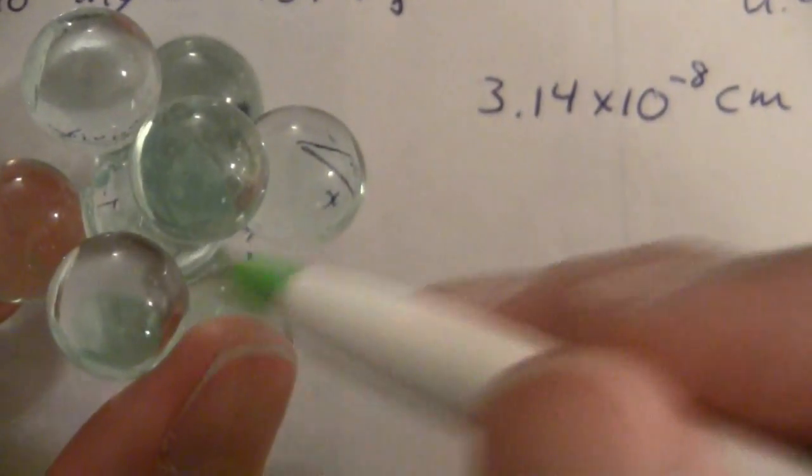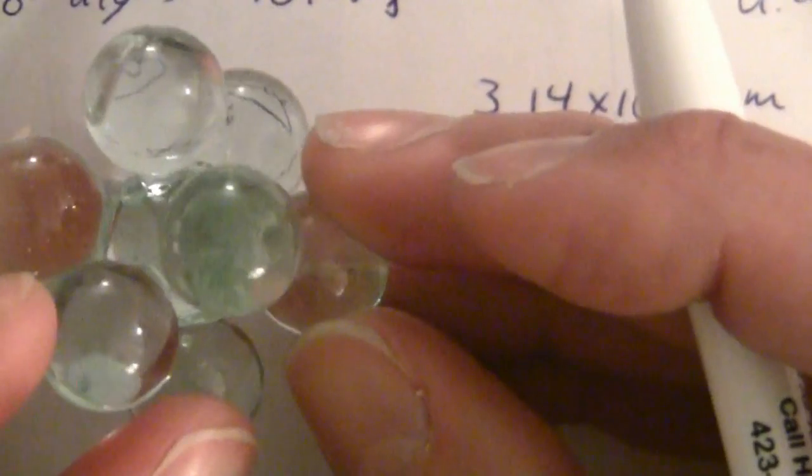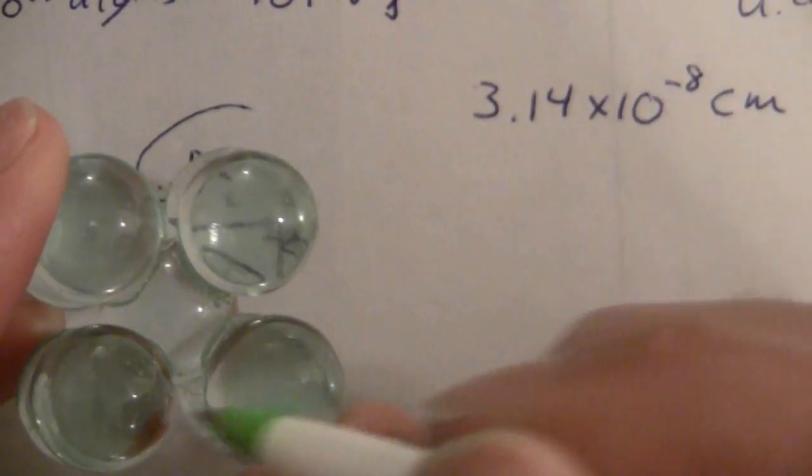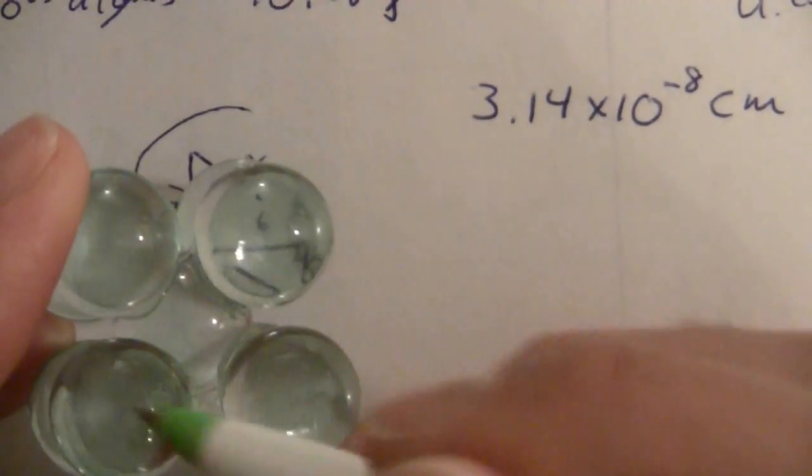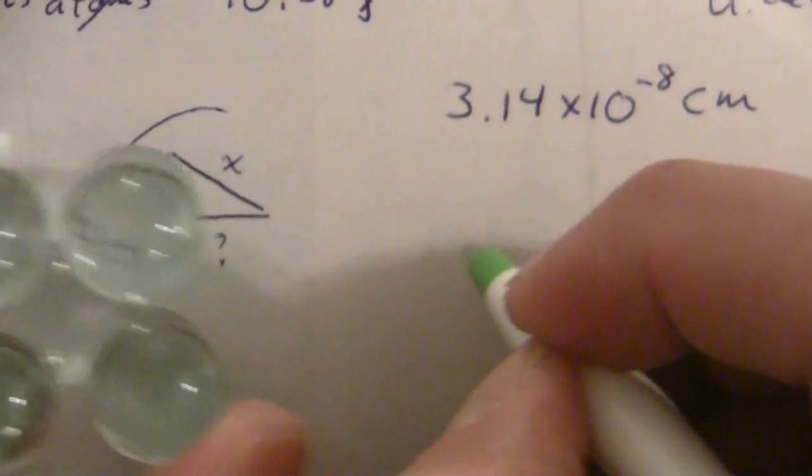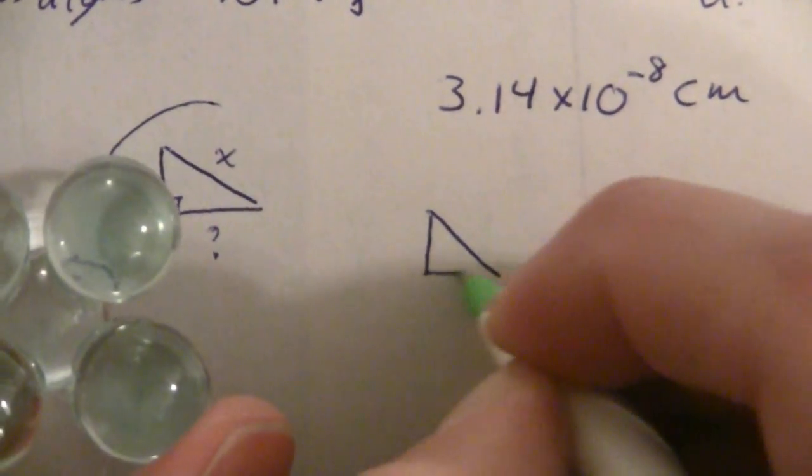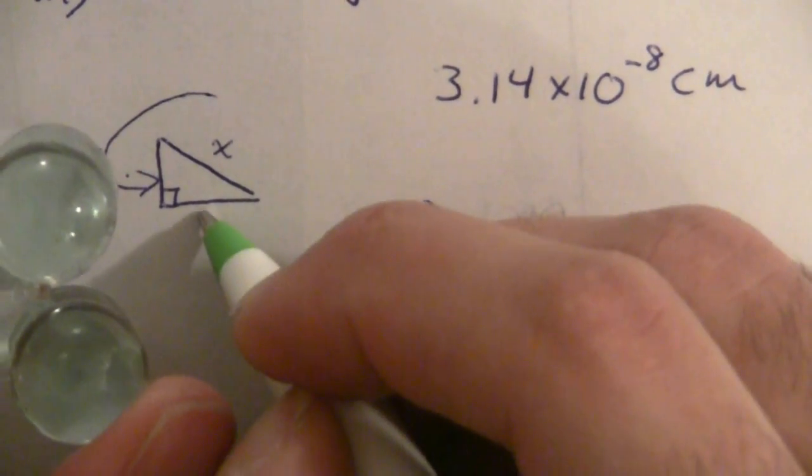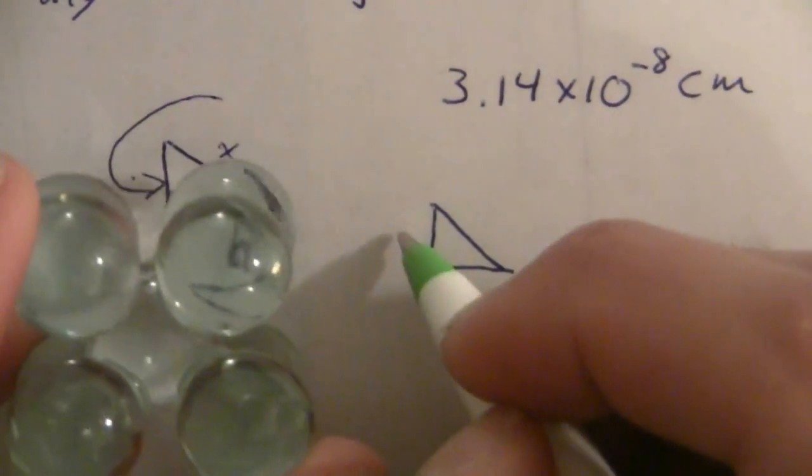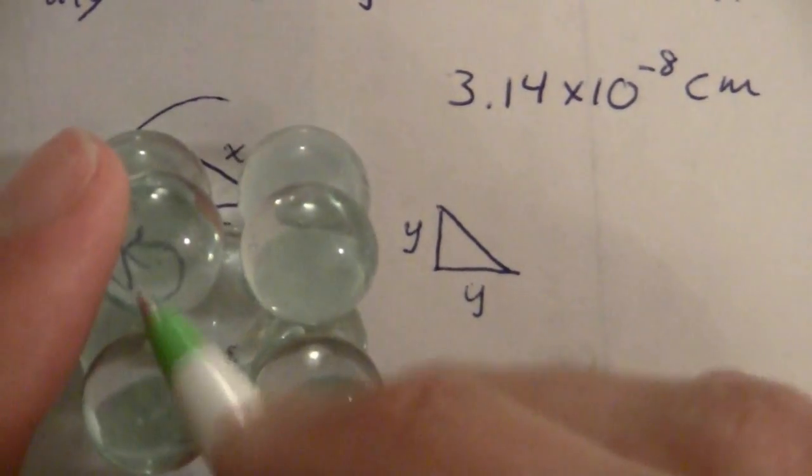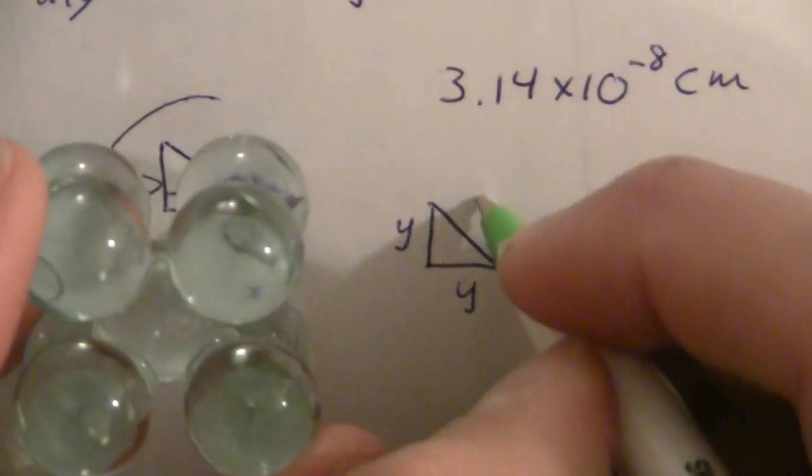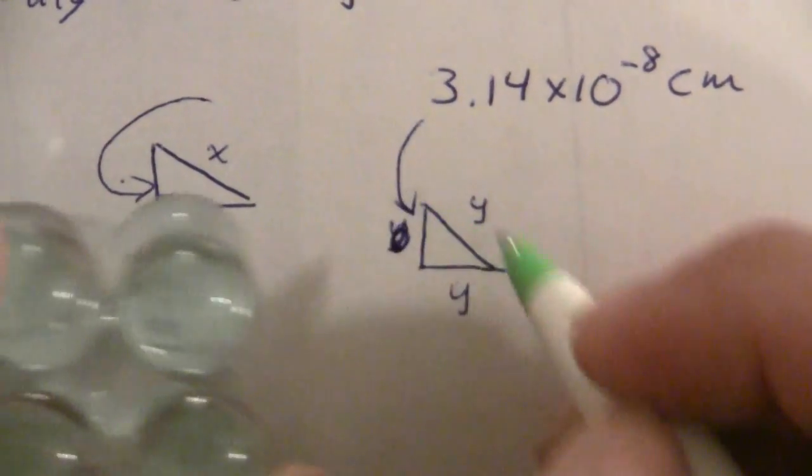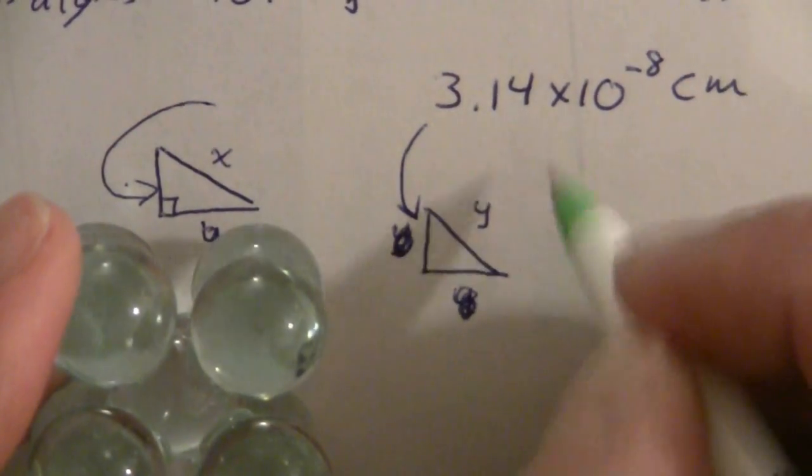So this distance is going to be from the, it's just the hypotenuse of the face there. That's my second triangle and this distance, let me just put a letter here, call it y. That distance y is going to be the same, I'm sorry, that is the hypotenuse there. And then this is my unit cell dimension.